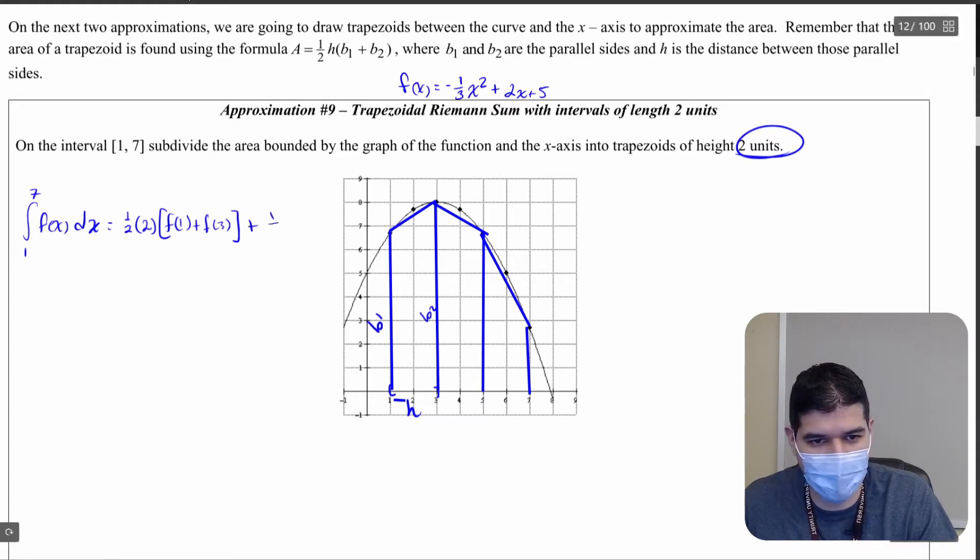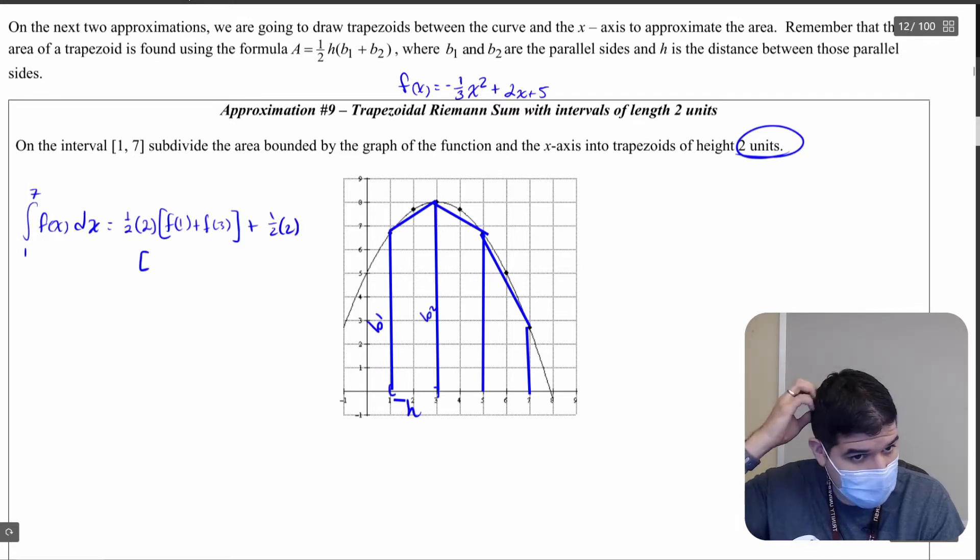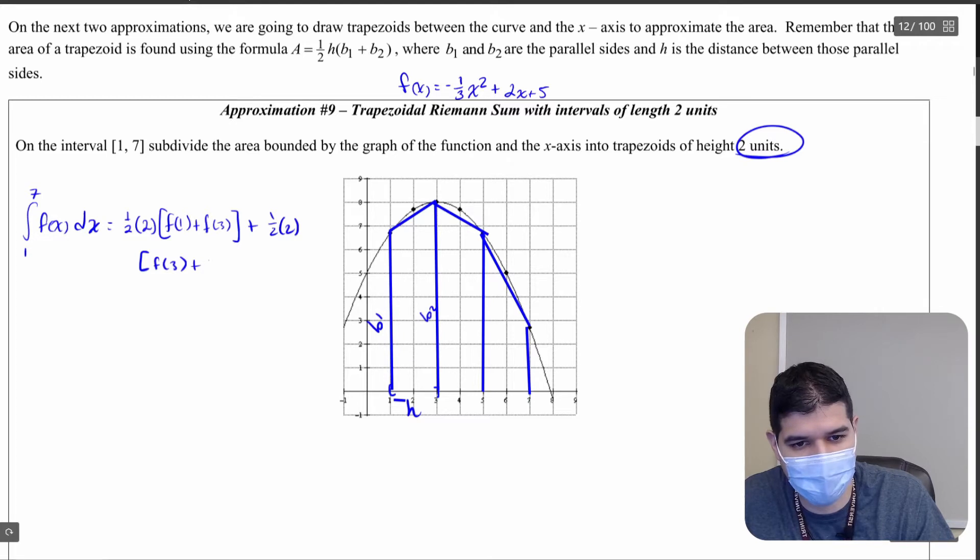So I'm going to keep going. One half times two and then I'm going to get times base one which is f of three plus base two which is f of five. And then I'm going to keep going with our third trapezoid. I have one half times two and I'm going to multiply that by base one which is f of five plus base two which is f of seven.